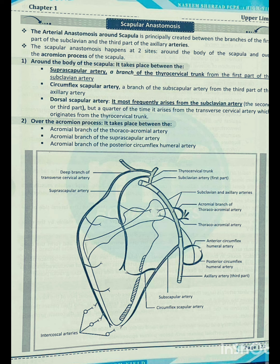In Naseem Sherdal, you can see the scapular anastomosis. The arterial anastomosis around the scapula is principally created between the branches of the first part of subclavian artery and the third part of axillary artery — around the body of scapula and over the acromion process. Around the body of scapula, it takes place between the suprascapular artery, which is a branch of the thyrocervical trunk from the first part of subclavian artery.